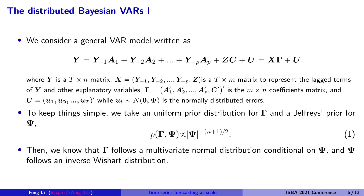We want to use this technique and extend it to the Bayesian framework. We first consider a general VAR model written in terms of regression type. In the VAR model you have response variables, lag dependencies, and a covariance matrix, and in the end you find a linear representation.